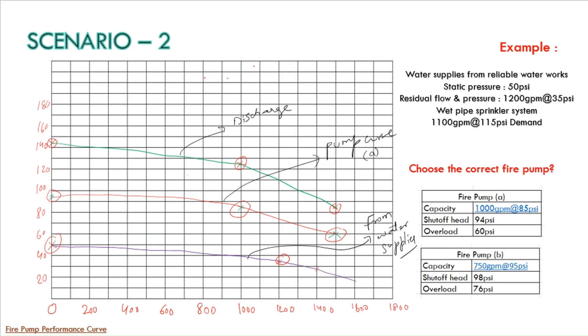I have marked all the points on graph. I will explain you in detail now. We have a flow in GPM on X axis and pressure in PSI on Y axis.